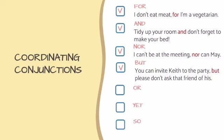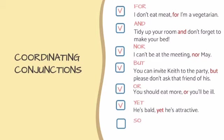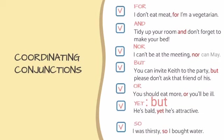Next, 'but' connects two clauses: 'you can invite Kate to the party' and 'please don't ask that friend of his.' Then 'or' connects: 'you should eat more' and 'you will be ill.' The conjunction 'yet' means 'but,' so 'he is bald, yet he is attractive' means 'he is bald but he is attractive.' Finally, 'so' connects 'I was thirsty' and 'I bought water.'